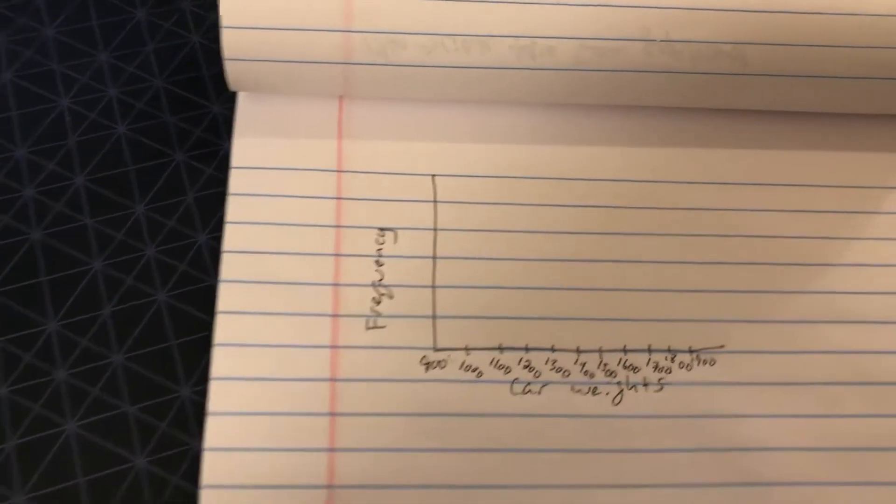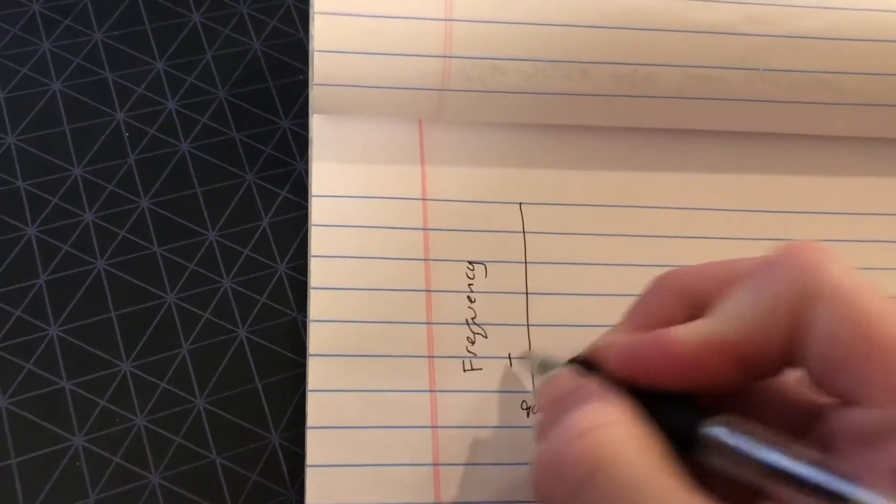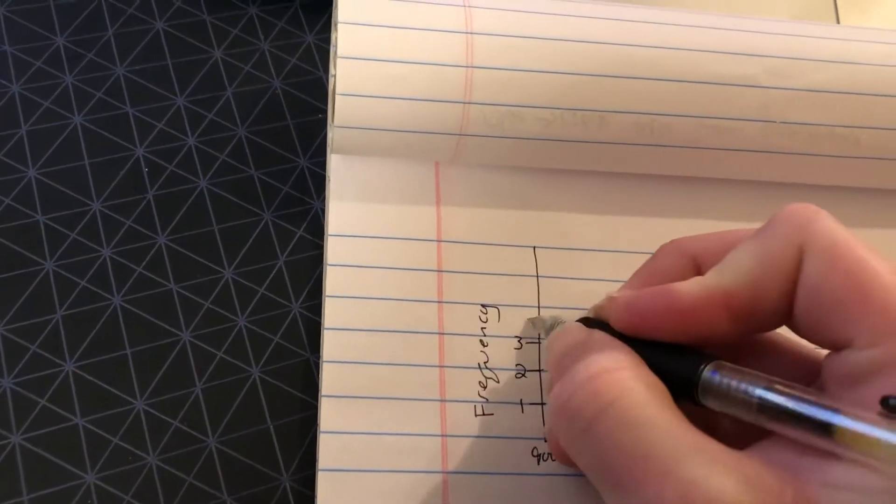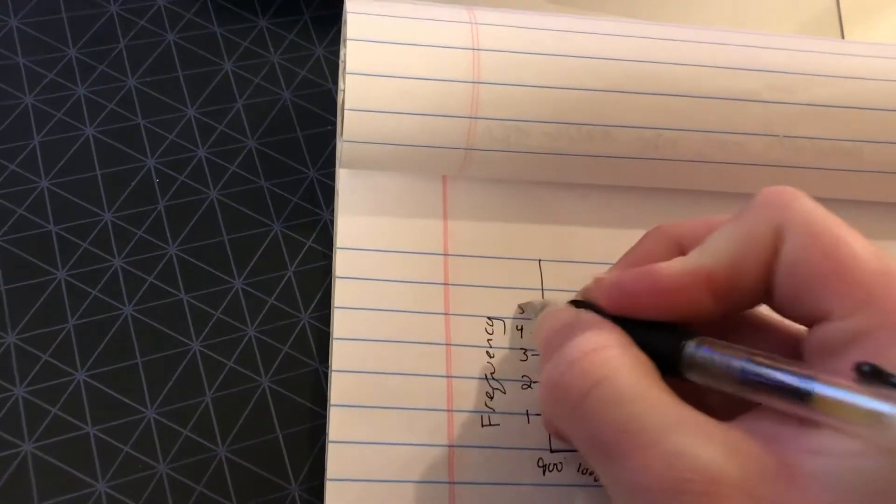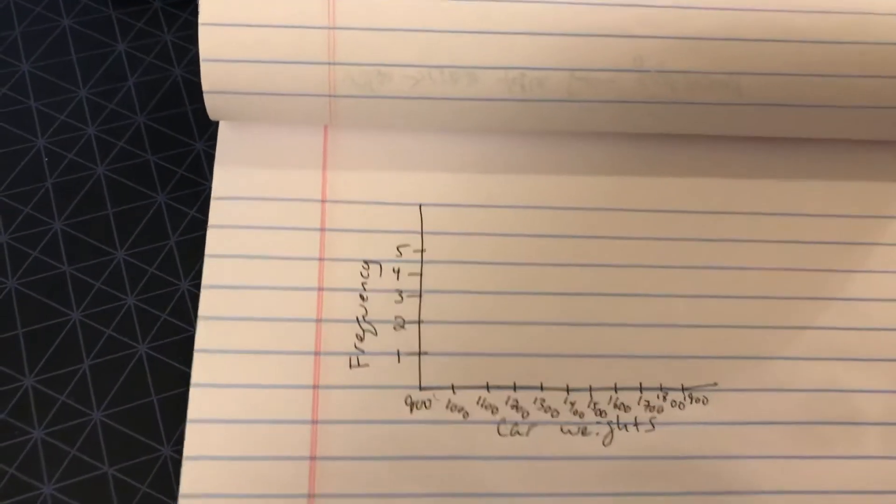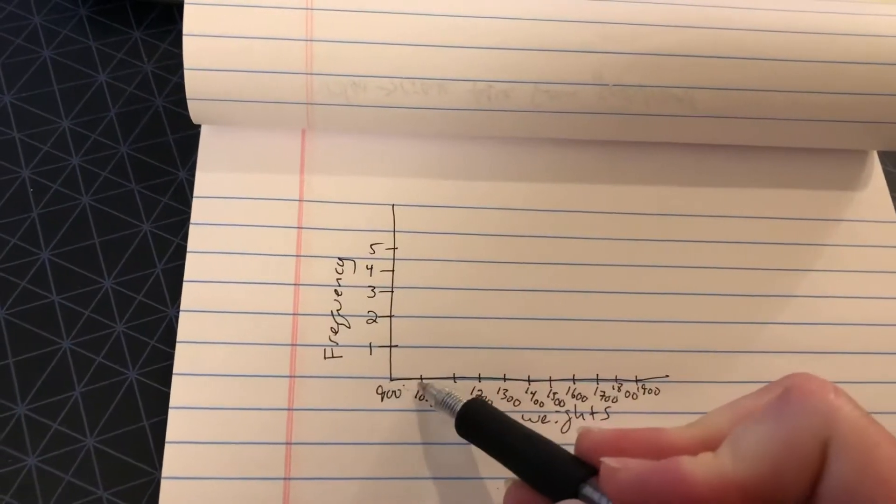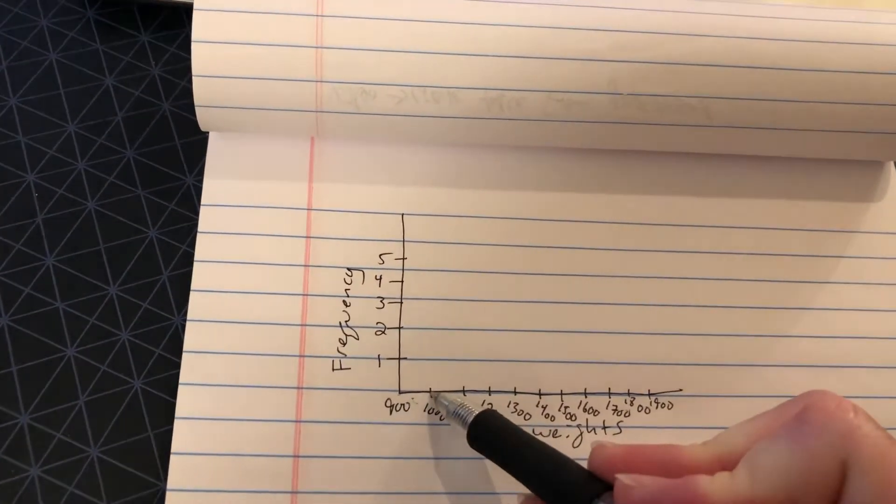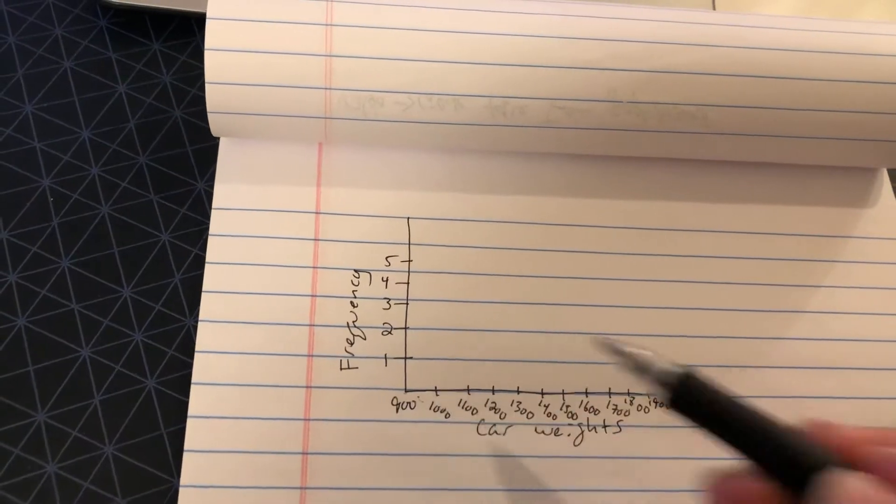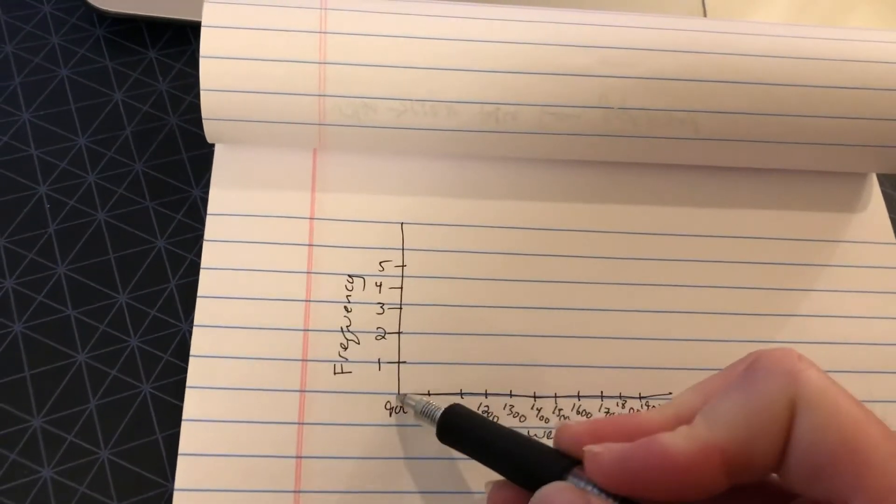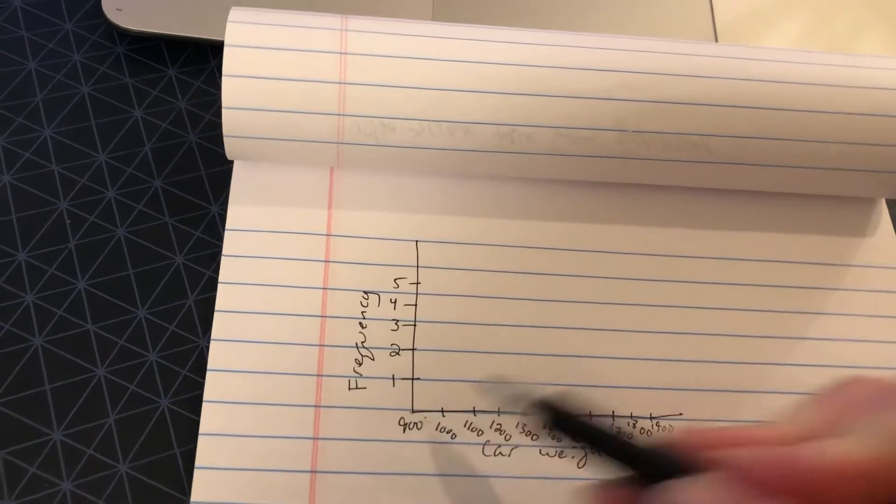Now we're going to count the frequency up here. 1, 2, 3, 4, 5. So we're going to create the frequency of how many times do we have a car between these two numbers? So if my first one is between 900 and 1,000 pounds, yeah, 900 and 1,000. So how many cars weigh between 900 and 1,000?